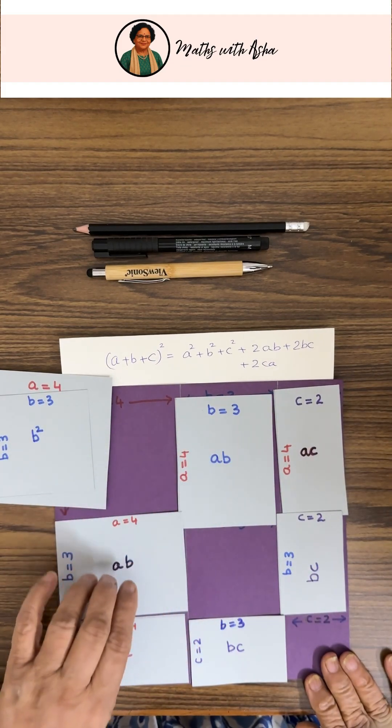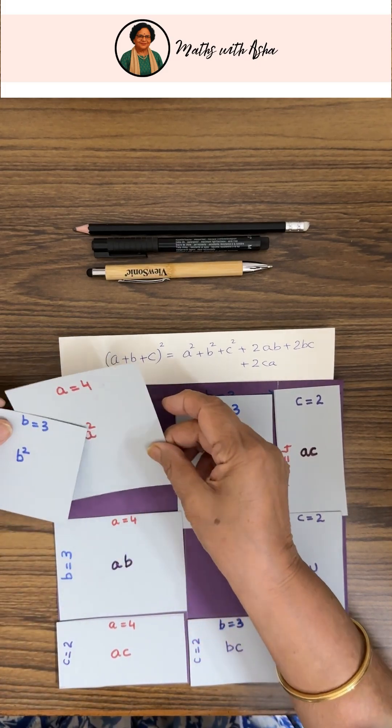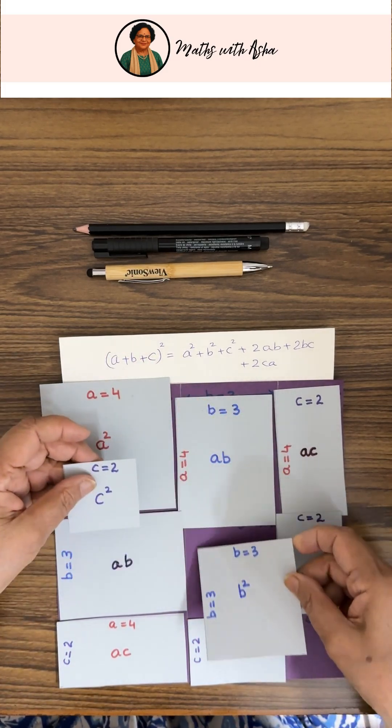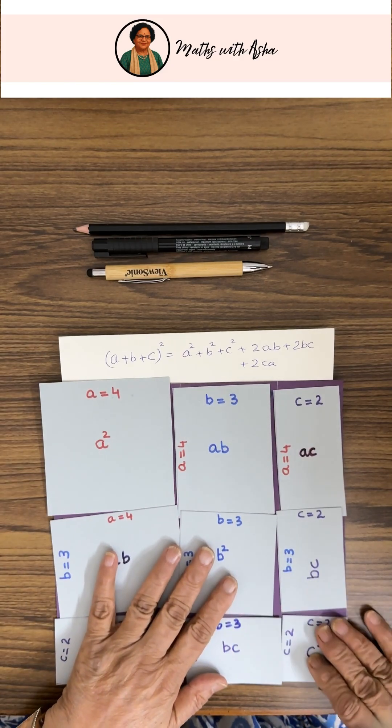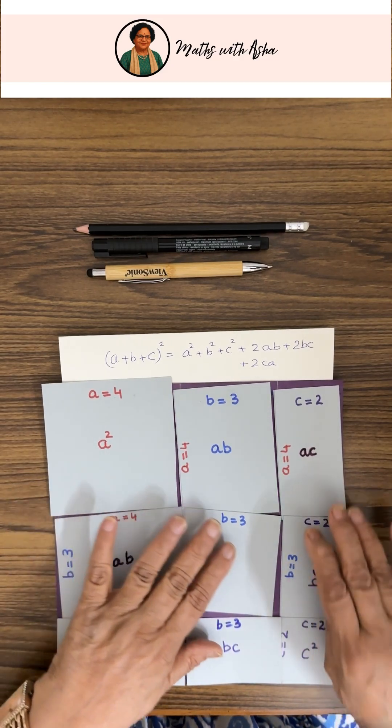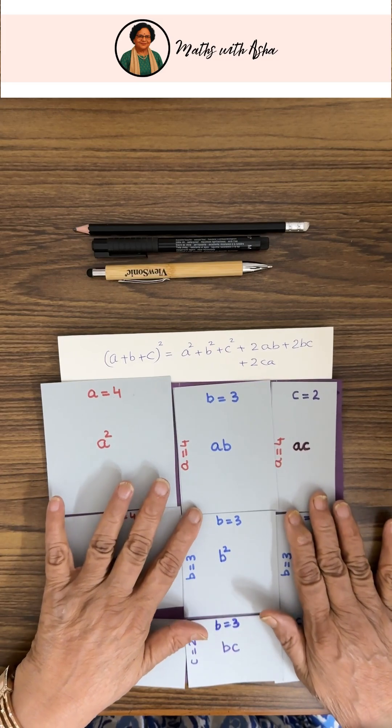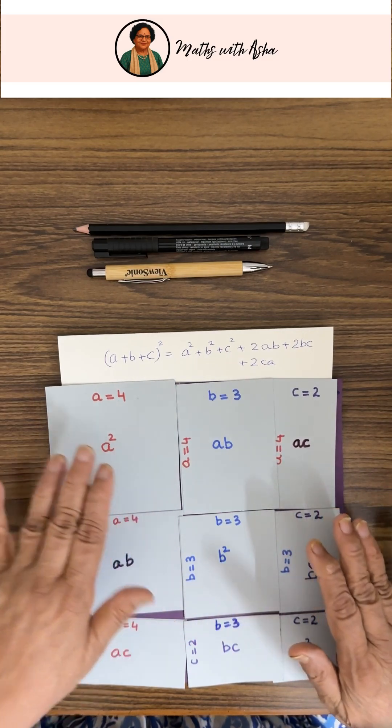So we have got that (a + b + c)² is equal to a² + b² + c² + 2ab + 2bc + 2ca.